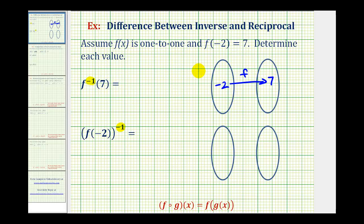Well, f inverse will undo function f, which means f inverse will map positive seven back to negative two.